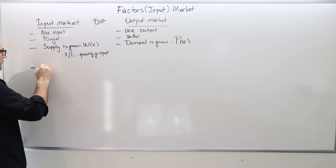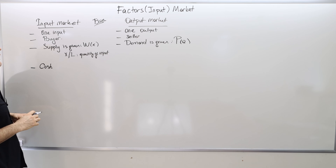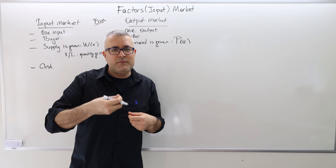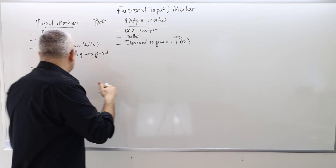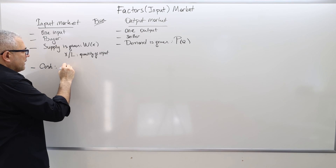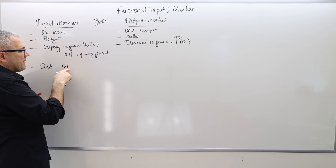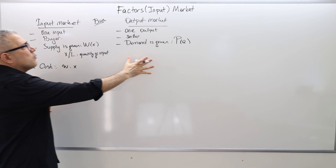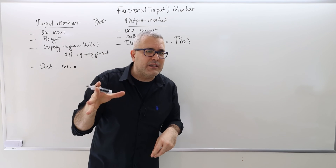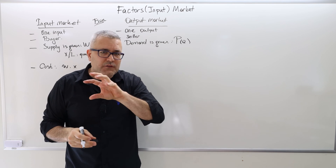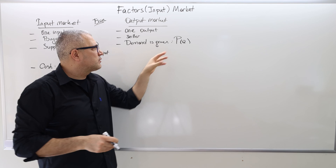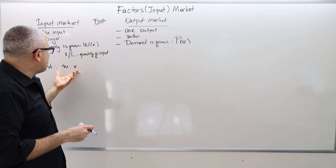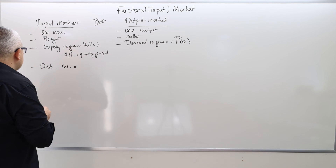There is a cost, and the cost is incurred by buying the input. So the cost is W times X — the price of labor times the amount of labor you use. We have only one cost, and the cost of quantity is determined by the cost of labor.